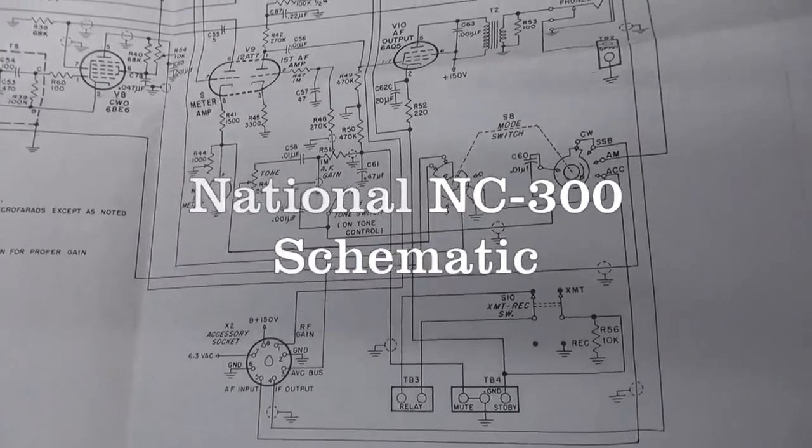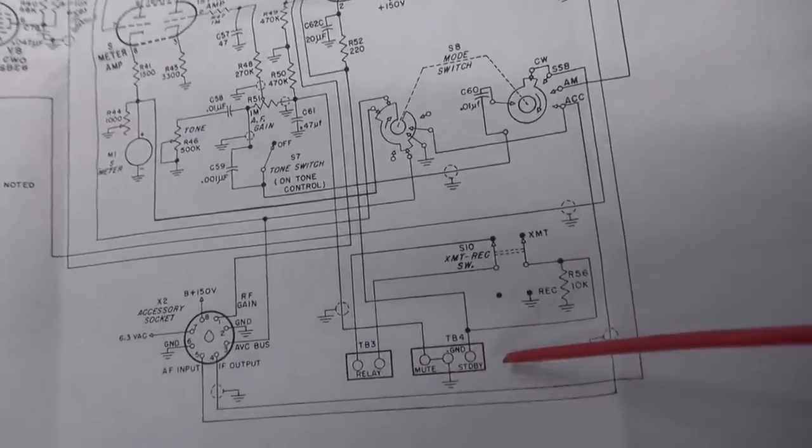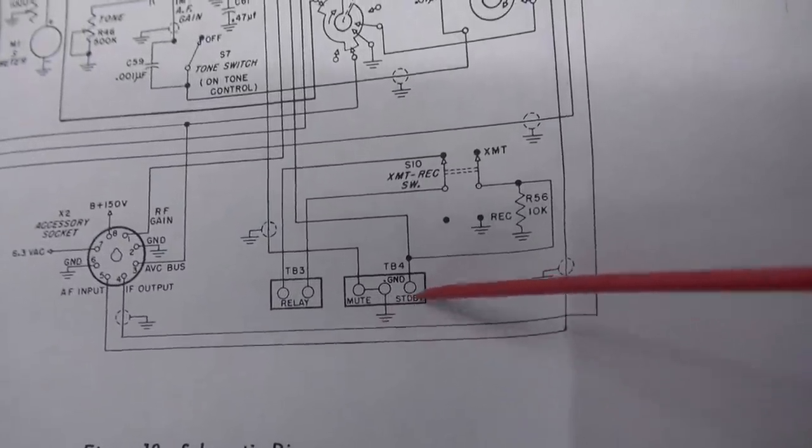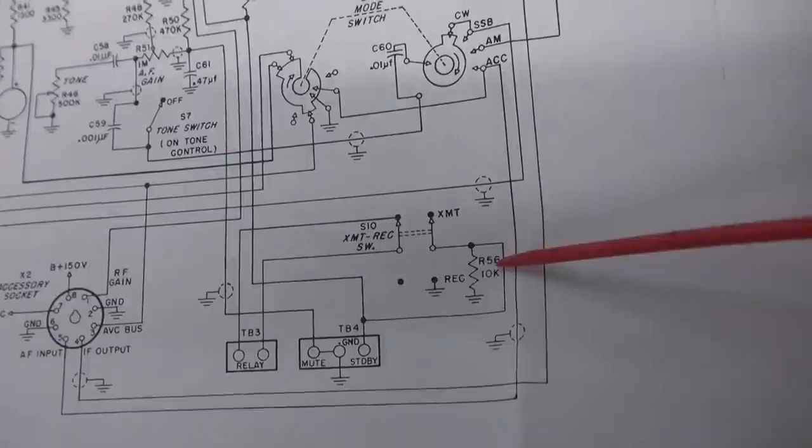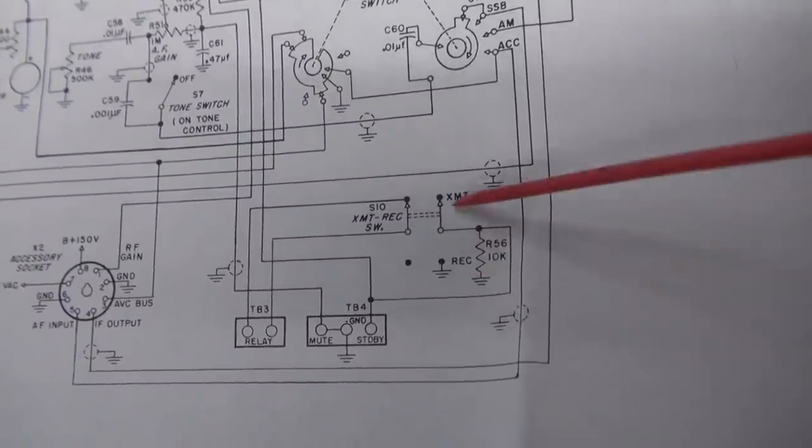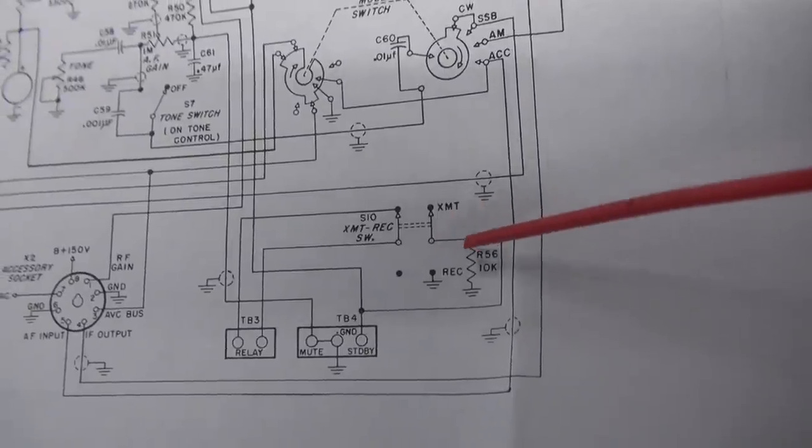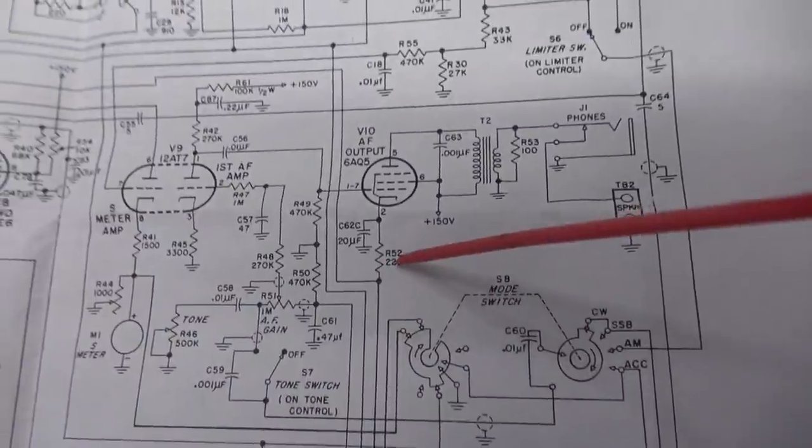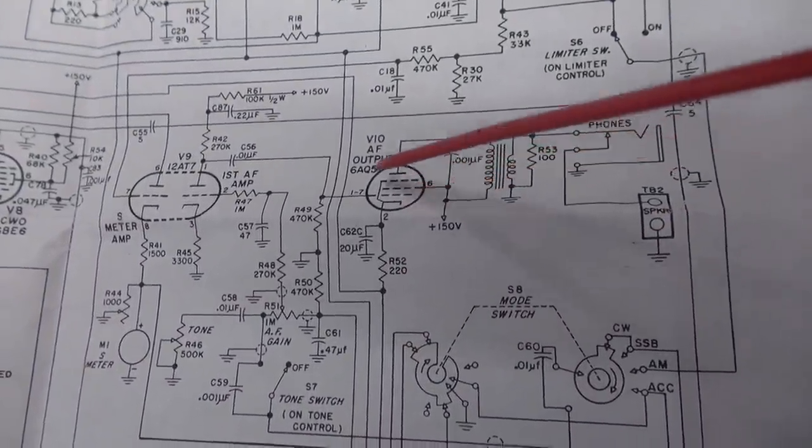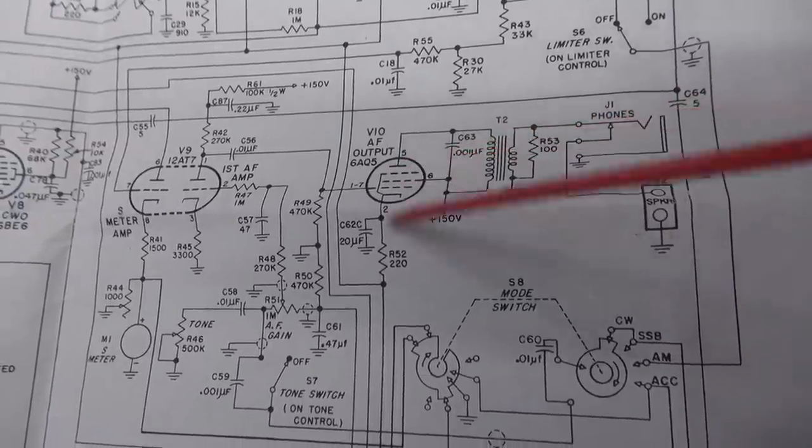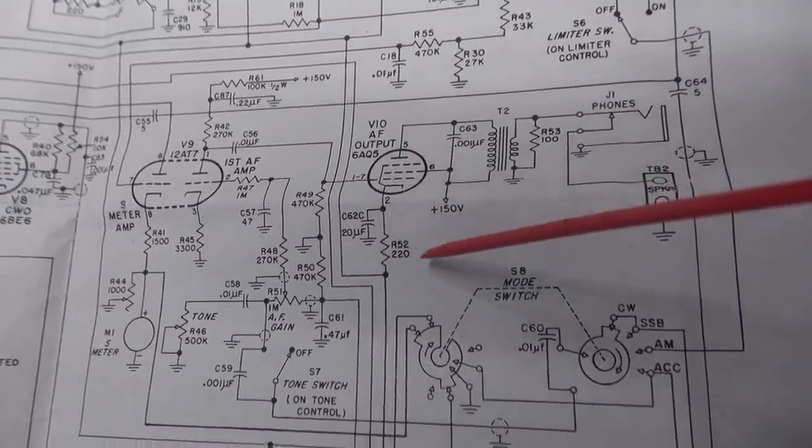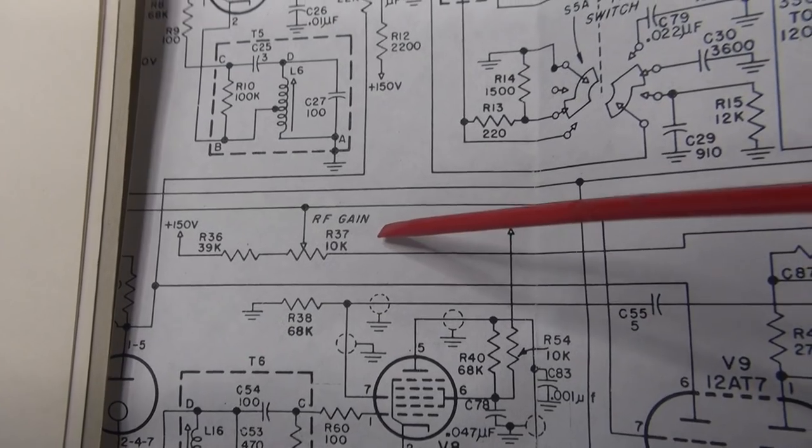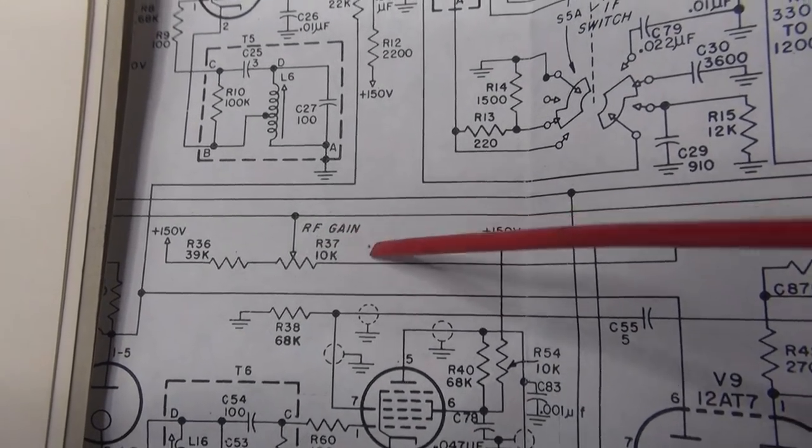Here we are, the NC-300. Here is our rear standby terminal board. You can see there's a ground, and you've got standby. It goes over here through a 10K resistor to ground, and there is our transmit-receive switch. So if you were to follow this line, you'll see, go up here, it actually grounds the cathode of the 6AQ5 output. So when you go to standby, it raises that, okay? Then if you go up here and swing over this way, there is the RF gain control, and guess what? It's also a 10K pot.